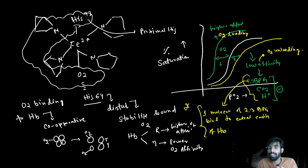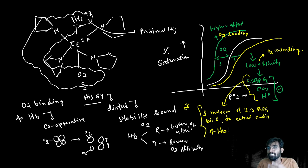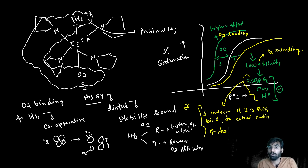This is why it's recommended to eat hygienic food and avoid carbonated drinks. When you climb a mountain, you feel suffocation because at high altitude, 2,3-BPG levels increase. As 2,3-BPG increases, it reduces the oxygen affinity of hemoglobin — this is sometimes called mountain sickness.